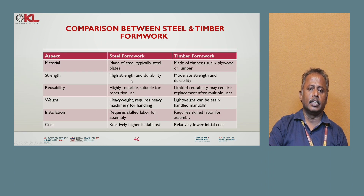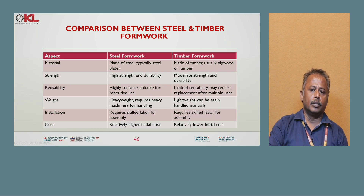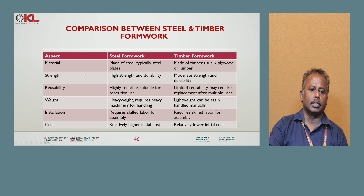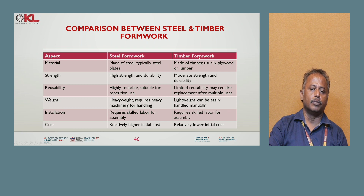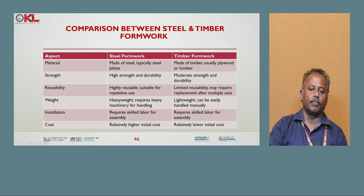Comparison between timber formwork and steel formwork: steel formwork is made from steel while timber formwork is made from wood. Steel has greater strength compared to timber. Steel formwork has high reusability compared to timber formwork, though its weight is more. Steel formwork requires skilled labor for assembly, while timber formwork does not. The initial cost is higher for steel formwork and lower for timber formwork.